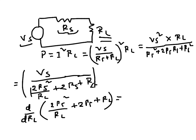So the first term becomes minus RS squared over RL squared because RL is the variable.